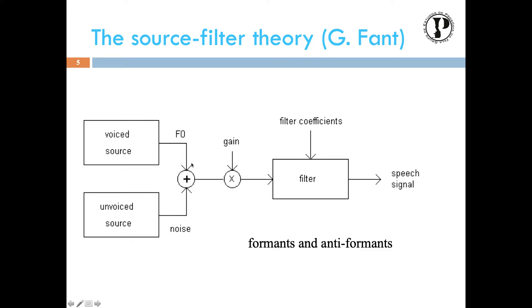The combination of the two sources can be made, or only one of the sources, with some gain involved. After that, the sound wave crosses the vocal tract, which can be understood as a filter with corresponding filter coefficients, and the speech signal is generated. The filtering part explains the intensity of the several frequency regions of the speech signal — the same applies for animal vocalizations.